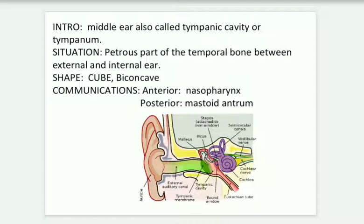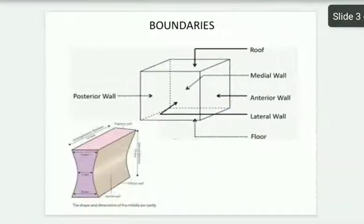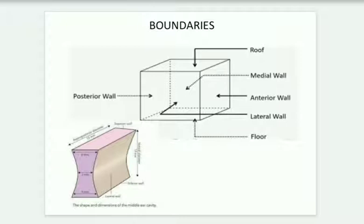Next come the boundaries. The roof is the tegmen tympani, with the lesser and greater petrosal nerves. The floor has the internal jugular vein bulb and the glossopharyngeal nerve.